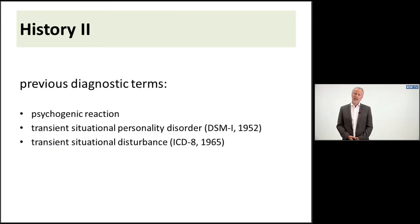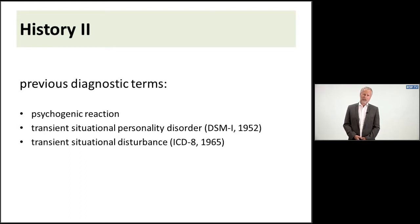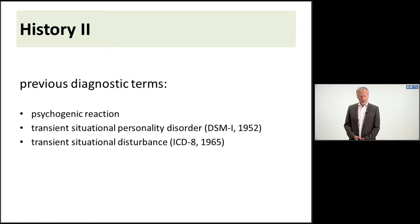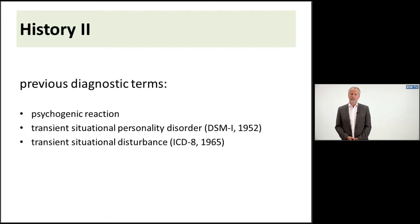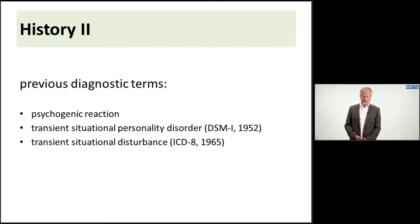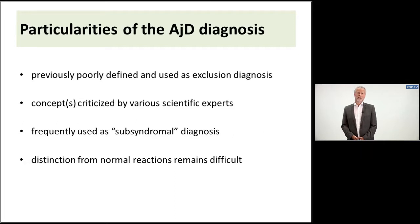These disorders had previous names, for example, psychogenic reaction for a long time, and later on in the 1950s, the DSM described a new label as transient situational personality disorder. It soon disappeared, but in ICD-8 by WHO, it was named transient situational disturbance.